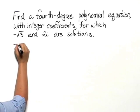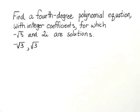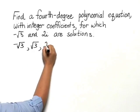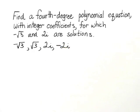So we not only have negative square root of 3 as a solution, we also have positive square root of 3 as a solution. Similarly, not only does 2i have to be a solution, but negative 2i also has to be a solution.